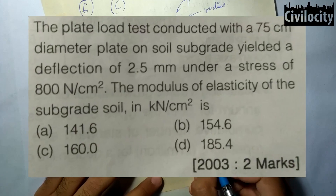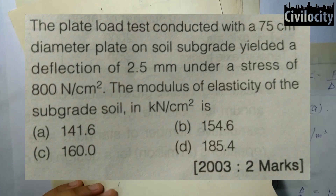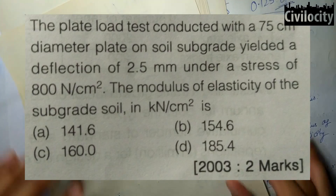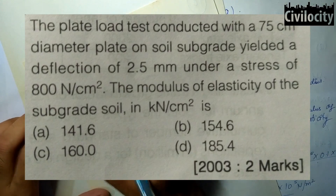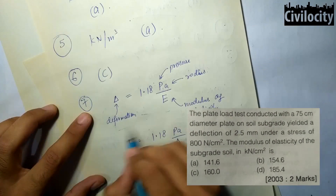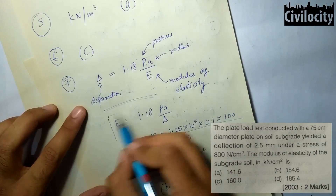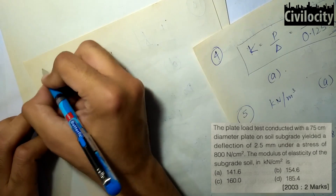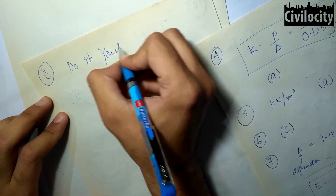The next question: a plate load test conducted with a 75 cm diameter plate on a soil sub-grade yielded a deflection of 2.5 mm under a stress of 800 N per cm². The modulus of elasticity of the sub-grade soil is? This is the same type of question as just solved. Apply the formula E = 1.18·p·a / δ, substitute all values, and find the answer. Please do this question yourself and write the answer in the comments below.